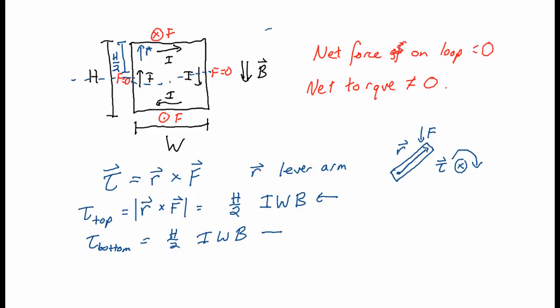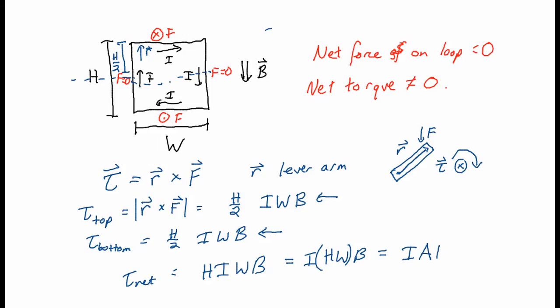So the net torque is equal to H × I × W × B. I can rearrange this as I times HW times B. And what is HW? HW is the area of the loop. So the torque on this loop is equal to IAB — the current in the loop times the area of the loop times the magnetic field.